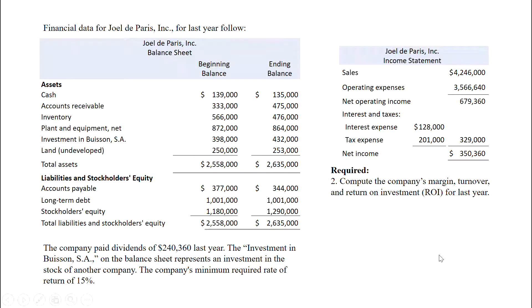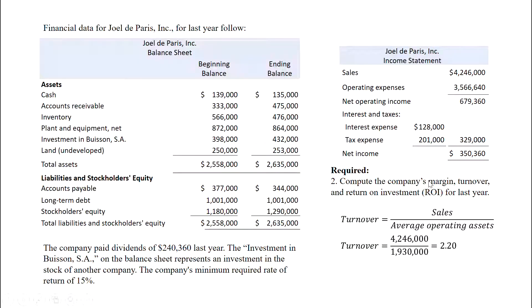Next is turnover. The formula is sales divided by average operating assets. Sales from our income statement is $4,246,000, divided by average operating assets of $1,930,000 from requirement one. Turnover is not a percentage — it's a number of times, and here it's 2.2. What this means is that on average, our operating assets — cash, AR, inventory, plant and equipment — turn over 2.2 times into sales.